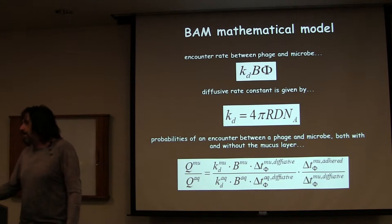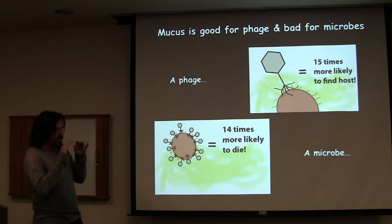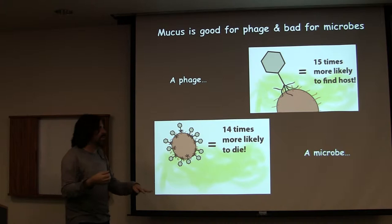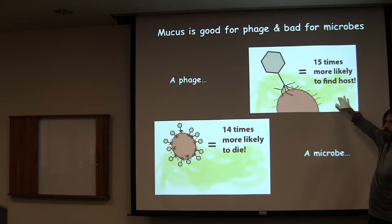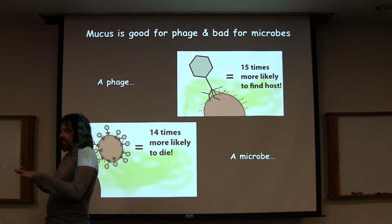If you put all that together, this is where this new model comes in — what matters is the outcome of the model. If you're living in that mucosal surface, even without HOP domain specificity — just the phage being slowed down by a mucosal surface — it's 15 times more likely to find a host by this model. And if you're a microbe, you're 14 times more likely to die. Those are gigantic selection pressures — it's really a big deal.